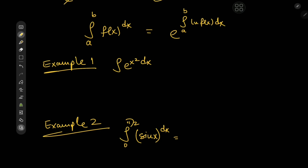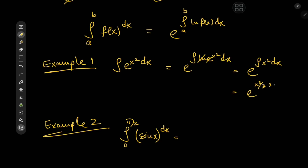For a couple of examples, we'll first consider the product integral of e^(x²). This sorts out to e to the integral of log(e^(x²)) dx. There's some cancellation, so we have e to the integral of x² dx, which gives us e to the (x³/3 + c). We can expand this as e^(x³/3) times e^c, which is just another constant. So the antiderivative is determined up to a constant multiple — which is pretty dope.